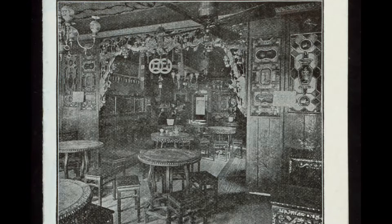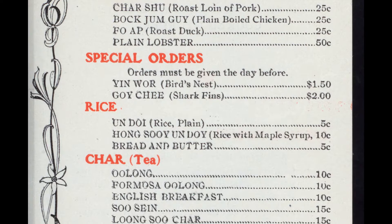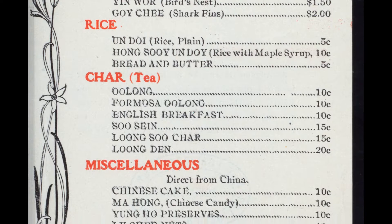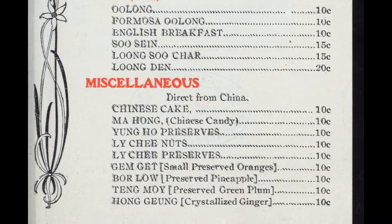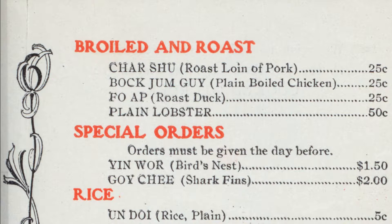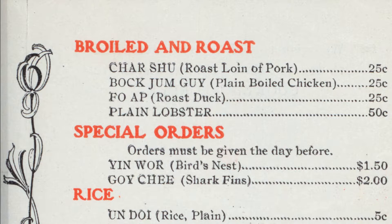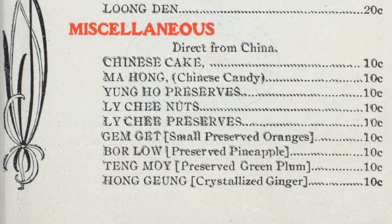Let's take the 1905 menu from the Oriental Restaurant in New York City as an example. Can you tell if it's in Cantonese or Taishanese? A lot of the differences between the two are tonal, so when they're transcribed, the Roman script can actually be exactly the same. For example, if you look at the broiled and roast section, the third item is F-O-A-P, meaning 'fire duck' — essentially roasted duck. In both Cantonese and Taishanese it sounds similar, so the romanization F-O-A-P works for both.